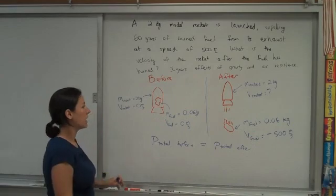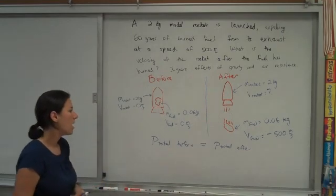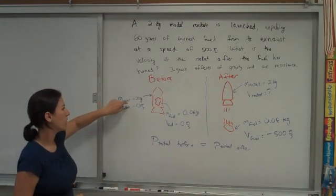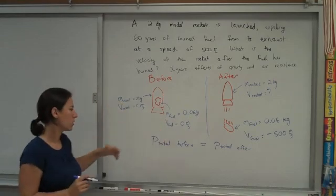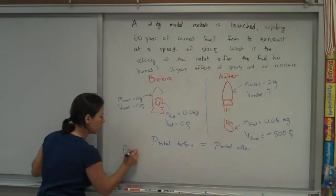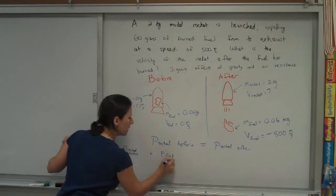And so we're just going to say the momentum of everything in this picture added up is the momentum of everything in this picture added up. And momentum, remember, is mass times velocity. So in this picture, we've got two things. We've got the rocket and the fuel. And so we're going to worry about the momentum of the rocket beforehand and the momentum of the fuel beforehand.